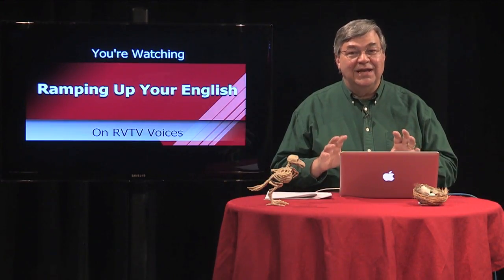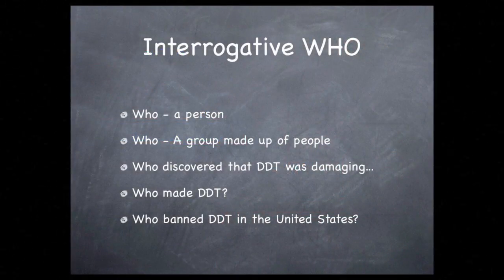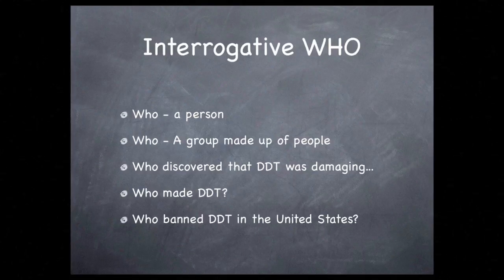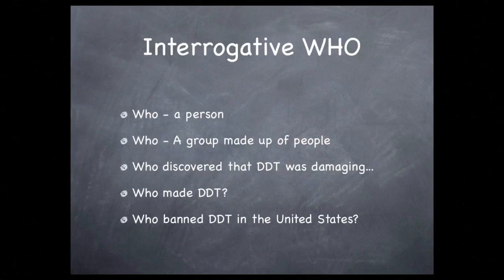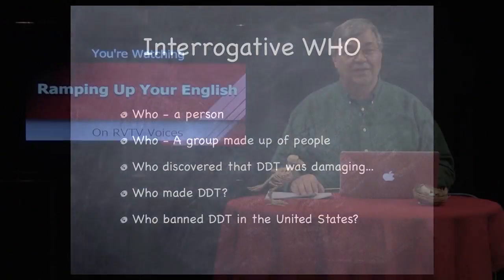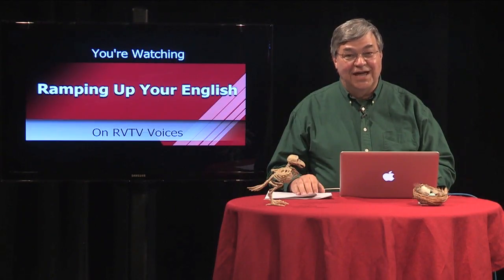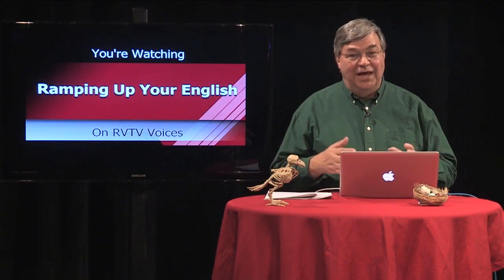Let's start with the beginning of the list — the interrogative who. The word who refers to a person or group of people, including an organization of people. For example, you could ask who discovered that chemical DDT was damaging the eggs of certain birds. The answer is the name of a single person: Rachel Carson. You could ask who manufactured DDT — the answer would be the name of a chemical company. You could further ask who banned DDT in the United States. The answer would be an agency of the government — the Environmental Protection Agency. Notice all interrogative sentences end in a question mark. Questions like these can be asked about the conservation status of your animal, and by asking such questions you may be able to add information to your report.